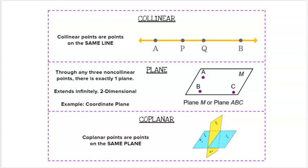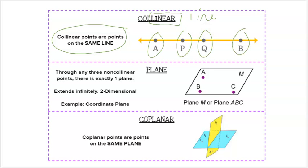Collinear. It looks like collinear, but it's pronounced collinear. If you remember linear, linear functions, that just means line, straight line. So collinear points are points on the same line. Points A, P, Q, and B we would call collinear because they all exist on the same line.